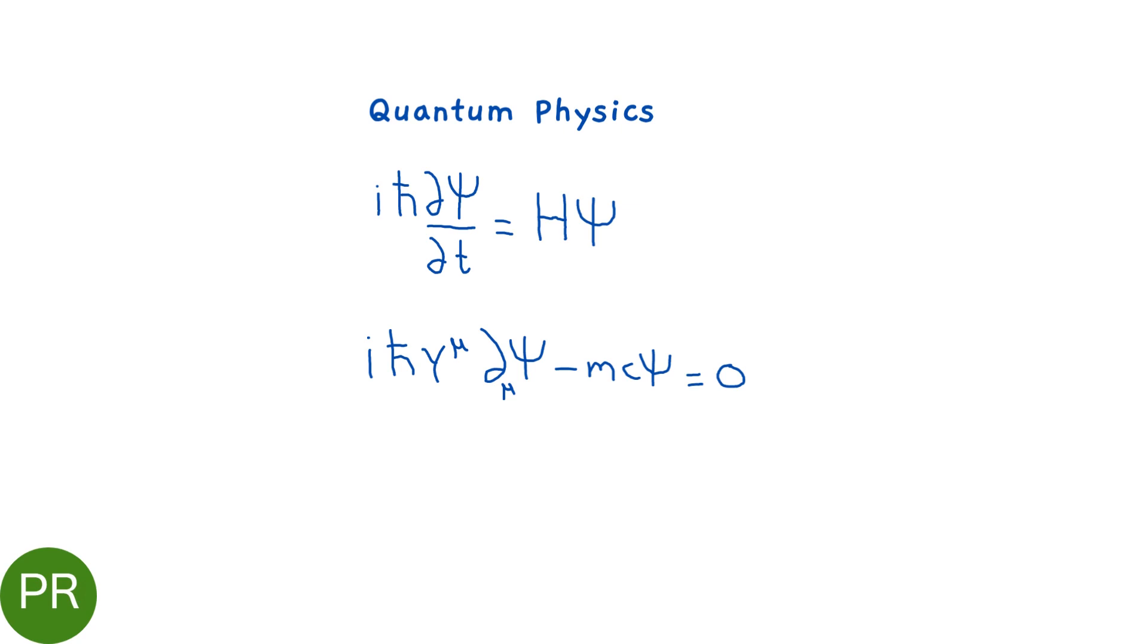So the Schrodinger equation or Dirac equation, which are important in our existence.